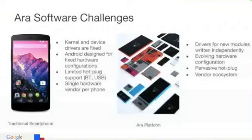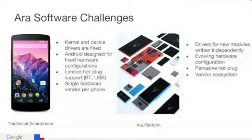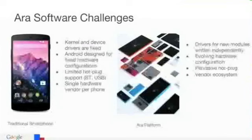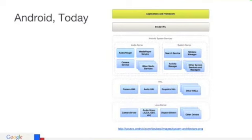Pretty much all the differences have to do with fixed device configurations and lack of hot plug support. There's also the issue of a single vendor per phone in a traditional phone — they make the system fingerprint, say this is the Android that runs on this phone, and ship it to Google for certification. Whereas here, there's a giant ecosystem of vendors contributing towards the configuration of any phone at any one time.